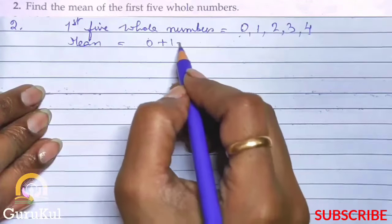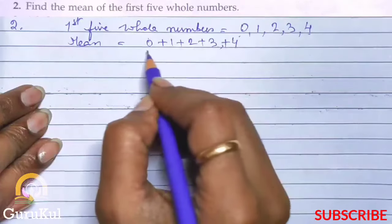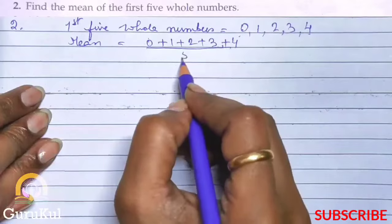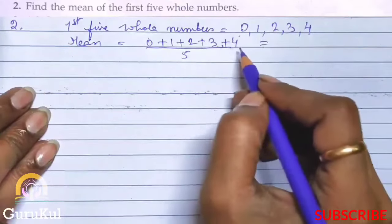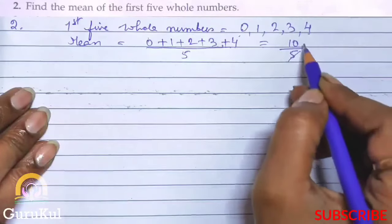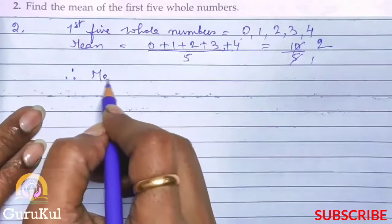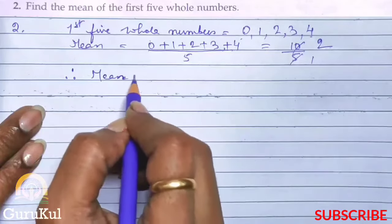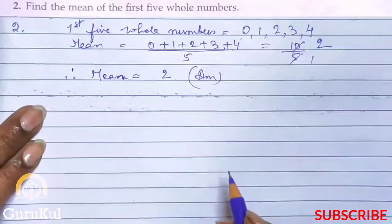0 plus 1 plus 2 plus 3 plus 4 divided by 5. That's 1, 2, 3, 4, 5, right? Then we have to add. So the answer is 10 by 5, which equals 2. Therefore mean is equal to 2. This is the answer.